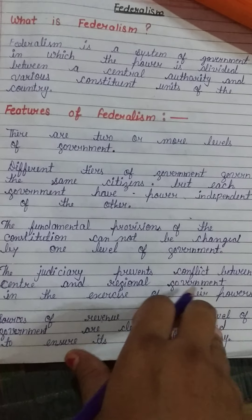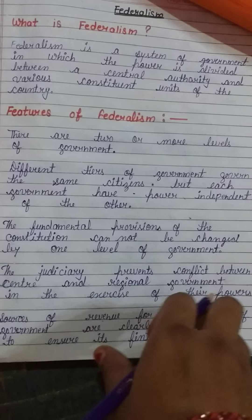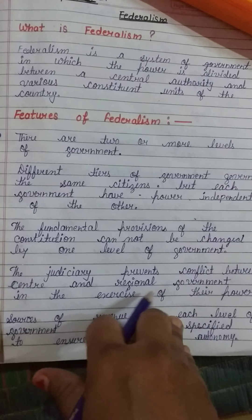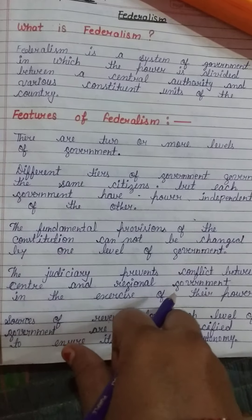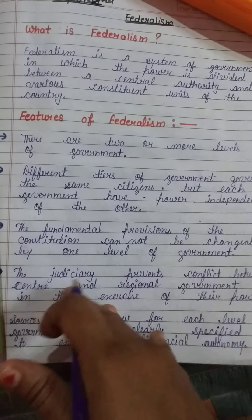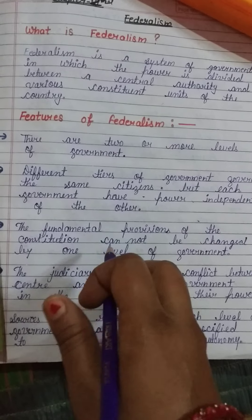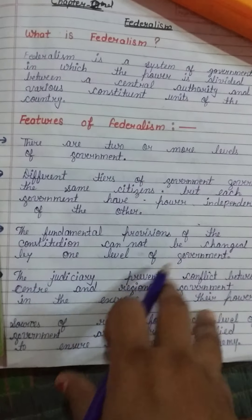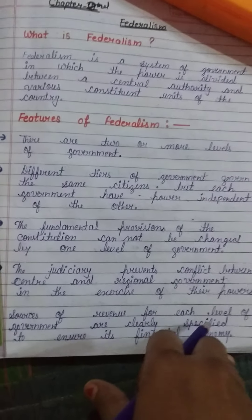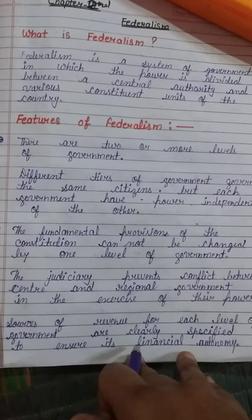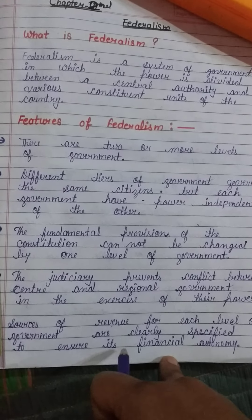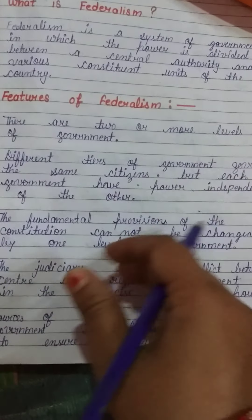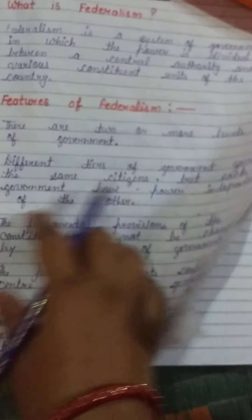The fundamental provisions of the constitution cannot be changed by one level of government. Sources of revenue for each level of government are clearly specified to ensure financial autonomy. The constitution has divided financial power so that no one level can dominate.